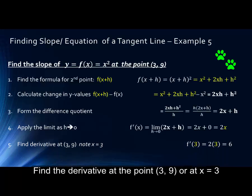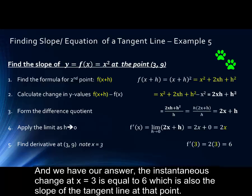Apply the limit as h goes to 0 and simplify. Now we find the derivative at the point or specifically at x equals 3. And we have our answer. The instantaneous change at x equals 3 is equal to 6, which is also the slope of the tangent line at that point.